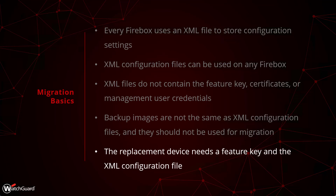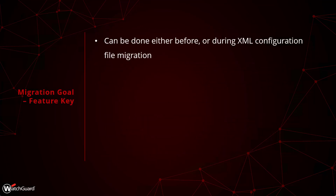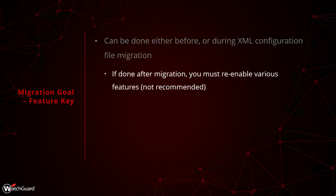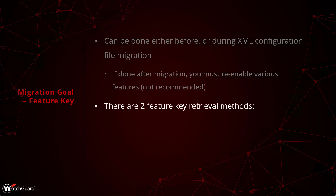You will need to get a feature key to put on the replacement device — the same thing you got on the current device, just for the new serial number. The first thing you should do is get that feature key; this can be done before or during the config file migration depending on which management interface you're using. If you wait and try to add the feature key after saving the configuration, it will disable your subscription services and a lot of other things may not work, so you'd have to go back and re-enable everything. Don't do it.